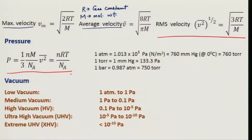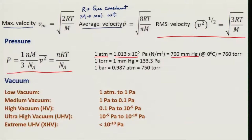Once we have defined pressure, we need to measure it, and there are several units for pressure. One of the most popular is one atmosphere, which is the normal atmospheric pressure we feel in everyday life, equivalent to 760 millimeters of mercury at 0°C, approximately equal to 10⁵ Pascal, and also called Torr. The three important units seen in vacuum technology are Pascal, Torr, and bar, and you can convert between them using these expressions.